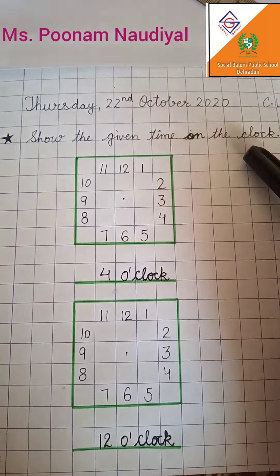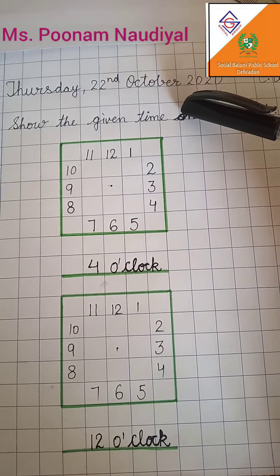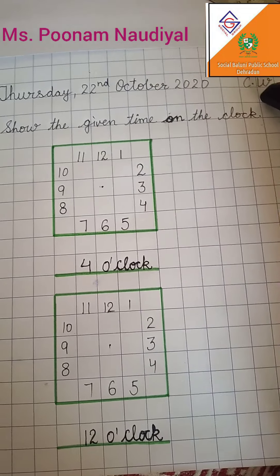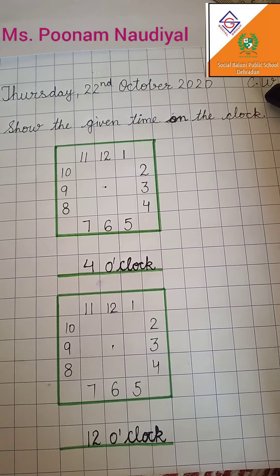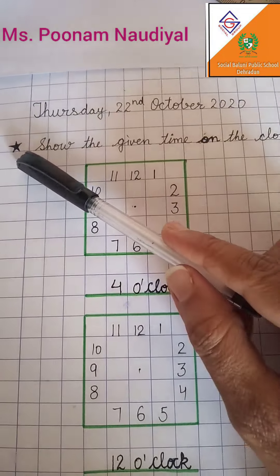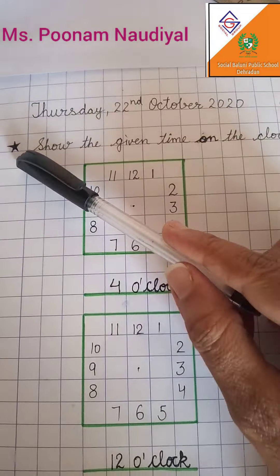First you will put the date. What is the date today? Thursday 22nd October 2020, and item CW for classwork. Now put the heading: show the given time on the clock.